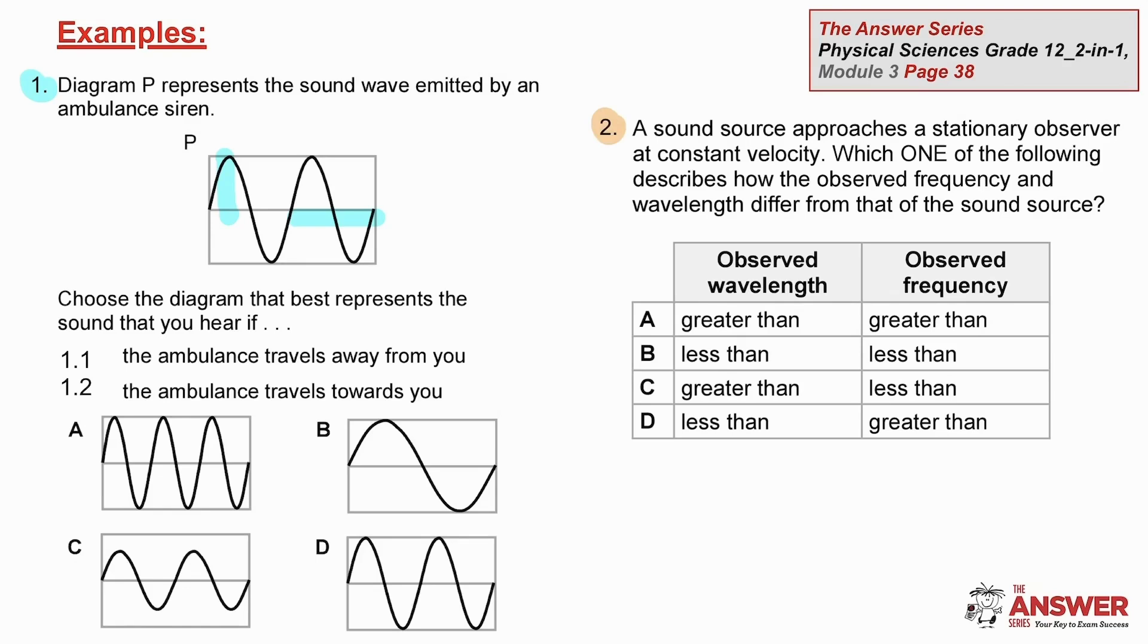Question 2 has an oft used structure. There are two options for each of these two choices. For the wavelength, it can be greater than or less than. And for the frequency, it can be greater than or less than. You decide which is true for the perceived sound as the source moves towards the listener.